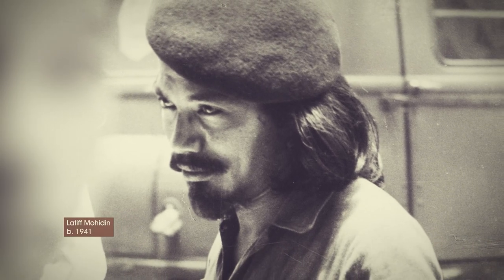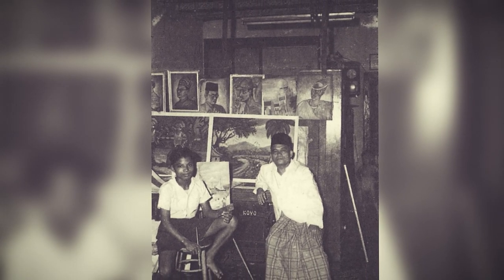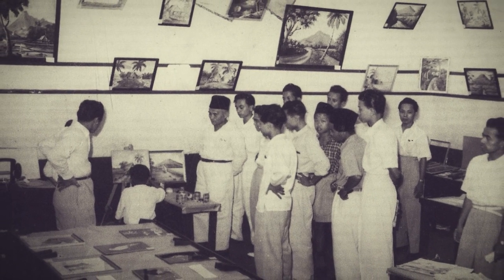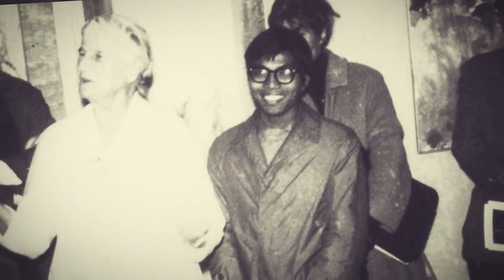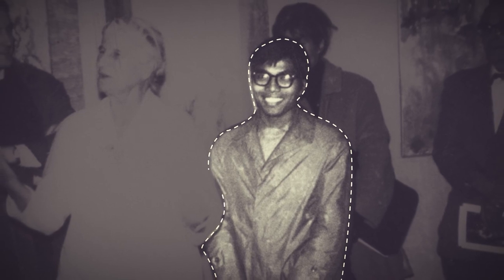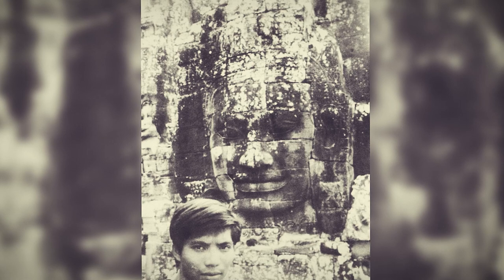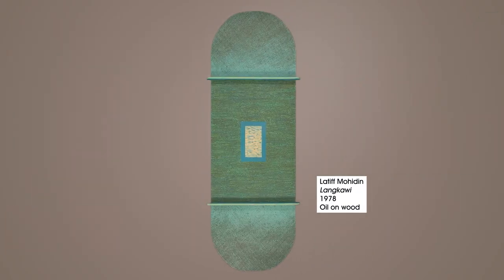Latif Mohiddin is a painter, sculptor and poet from Malaysia. In 1949, he moved to Singapore for his early education. His artistic talent was recognized from a young age, with his first solo exhibition in 1951 when he was just 10 years old. He received a scholarship to study painting in Germany from 1960 to 1964. Upon graduation, he traveled extensively around Southeast Asia until 1969, after which he was awarded scholarships to study printmaking in Paris and New York. Southeast Asian nature, culture and architecture have continued to form the basis of his artistic practice.